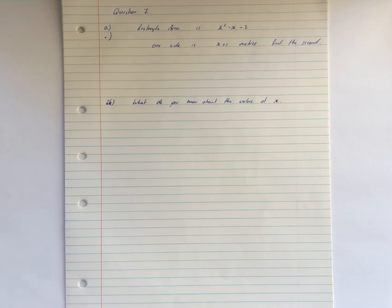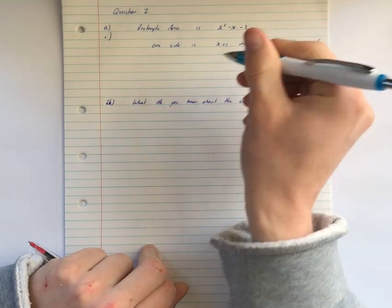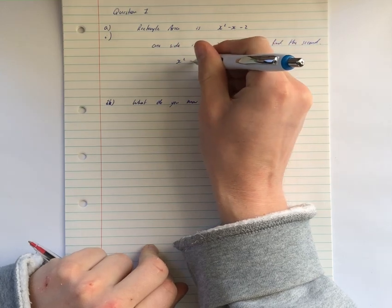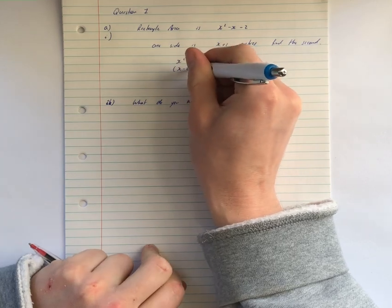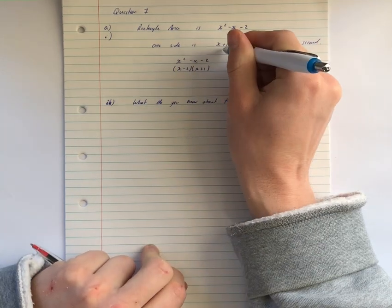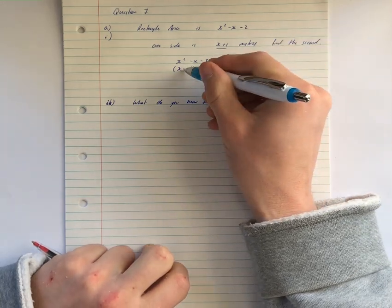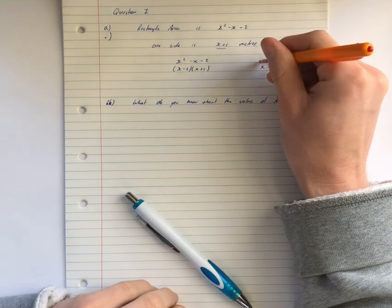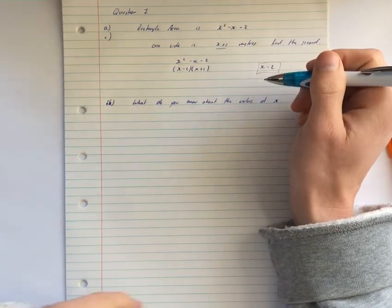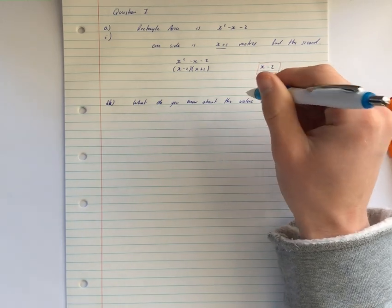Starting off with a classic geometric problem for the MCAT: given that the area of a rectangle is some equation, can you find the sides? It's just factorization. We take the area x² - x - 2 and factorize that to get (x - 2)(x + 1). We're told x + 1 is a side of the rectangle, so the other side is x - 2.